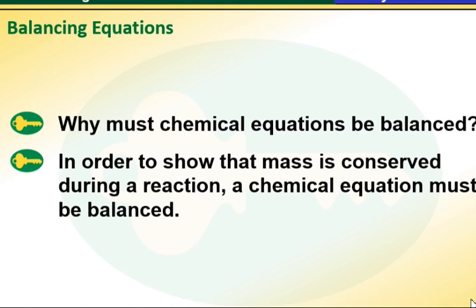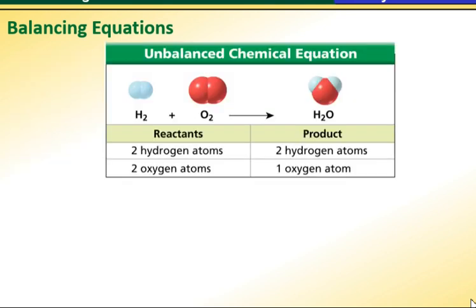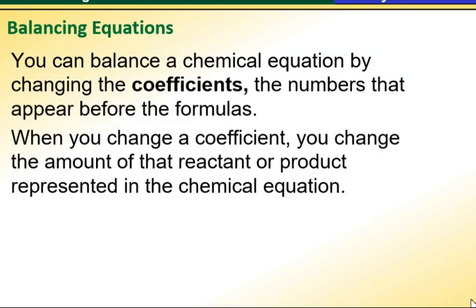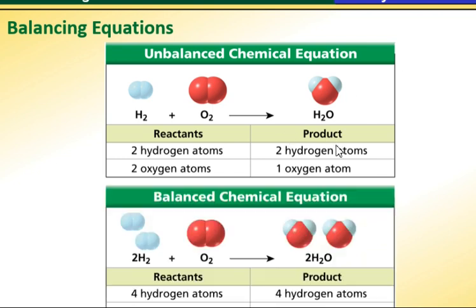This helps us accurately represent the reactions and calculate the amounts of substances involved. For example, let's take this example. Water is made up of hydrogen and oxygen, so two atoms of hydrogen and two atoms of oxygen. Once they mix together, the product is two atoms of hydrogen and one atom of oxygen. Technically that does not work because the amount of atoms on the reactant side is not the same as in the product.